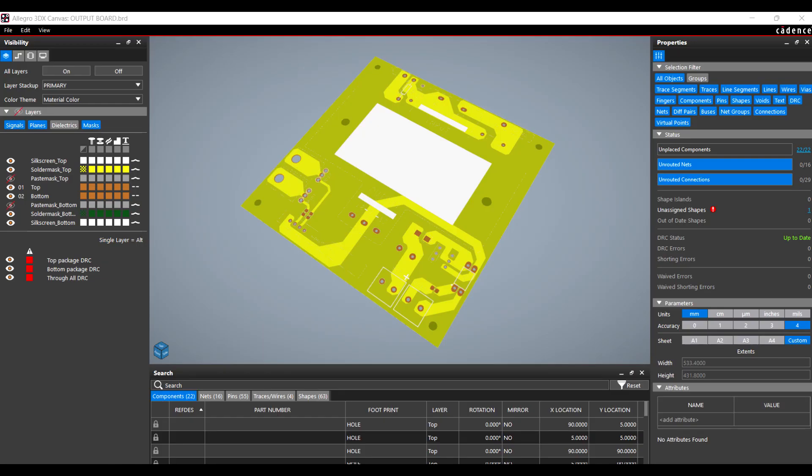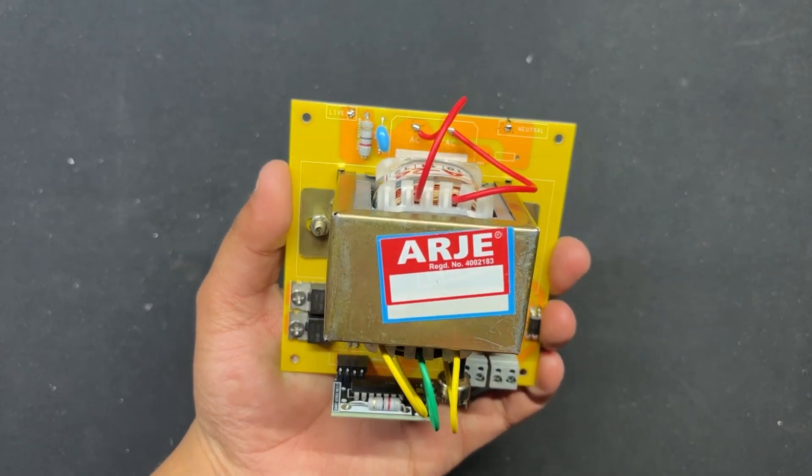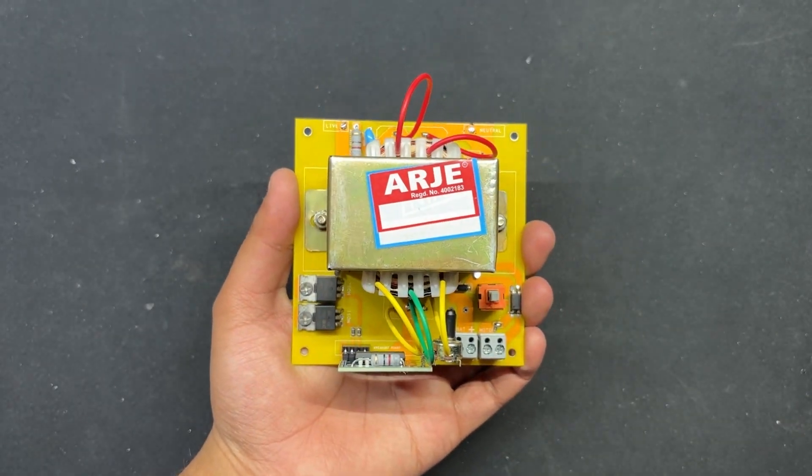This PCB also has two mounting holes, so the transformer can be securely attached with nuts and bolts to the circuit. Also we have added a CON2 screw terminal, via which we will connect a 12V lithium battery pack to the circuit.